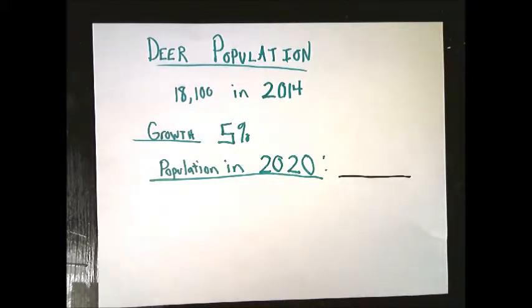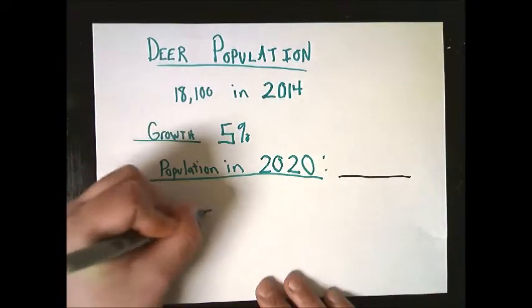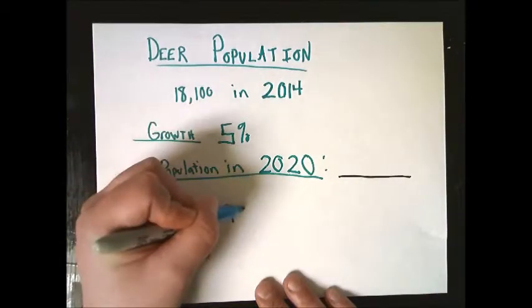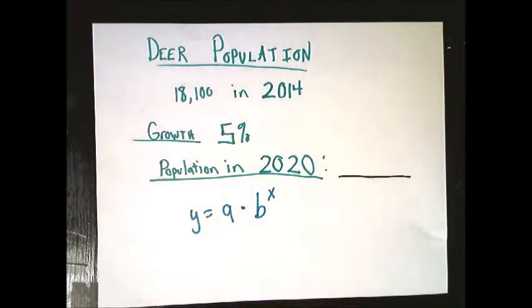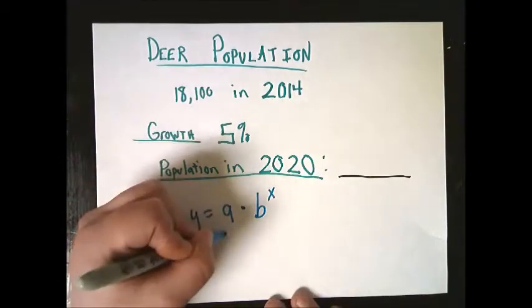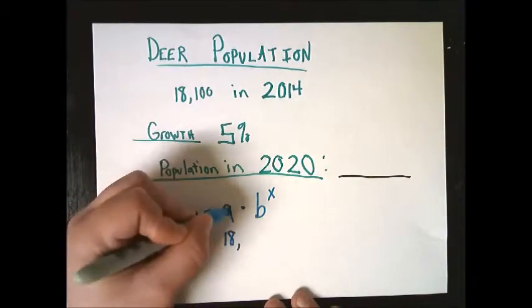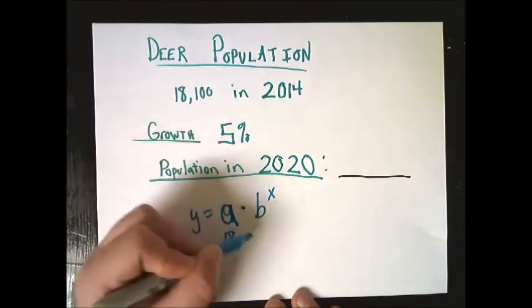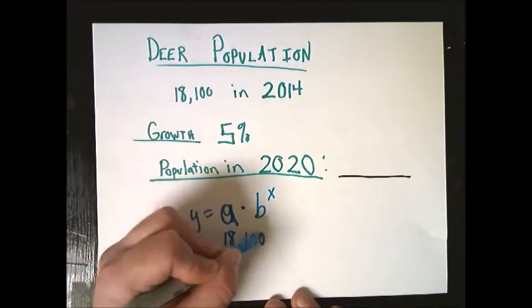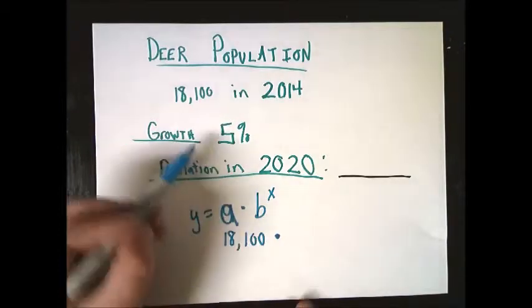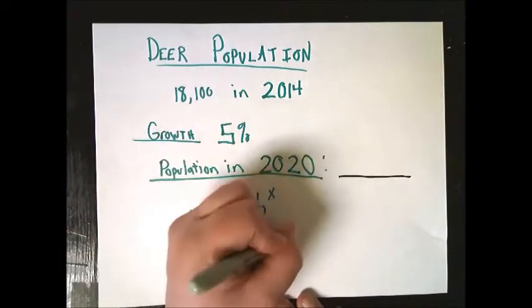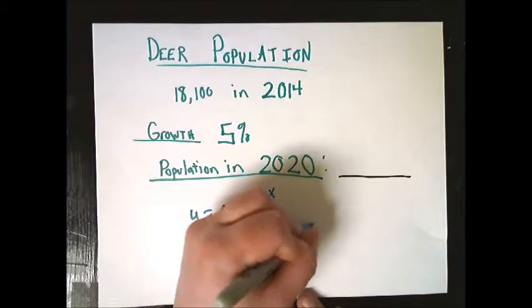I'm not advocating one response over another, so don't try to make it into a political statement. I'm just saying deer population is something that people who help preserve wildlife have to consider. So if you have 18,100 deer in your state, and you have a growth rate of 5%, which is a pretty big growth rate, what's the population in 2020? We'll start with the same formula. My starting point is 18,100. My b value would be what my growth factor is, so 5%. So once again, it's 1.05.